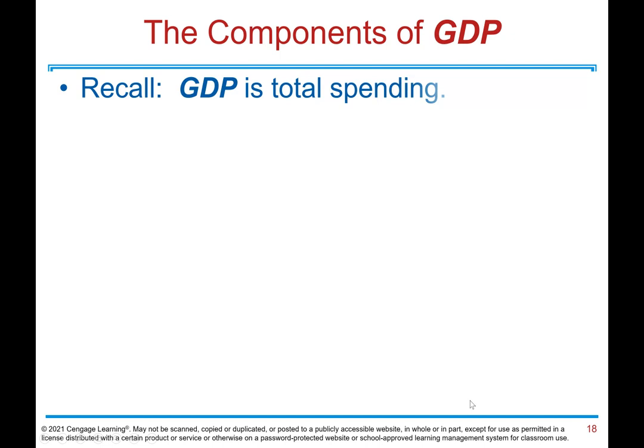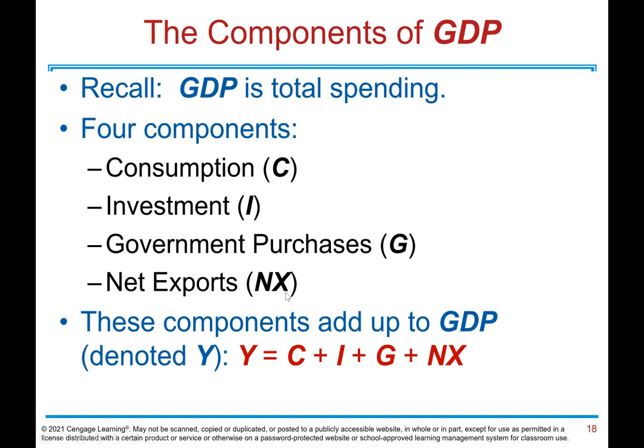The components of GDP. Recall GDP is total spending. There are four components: Consumption (C), Investment (I), Government Purchases (G), and Net Exports (NX). These components add up to GDP, denoted by Y. So Y = C + I + G + NX.